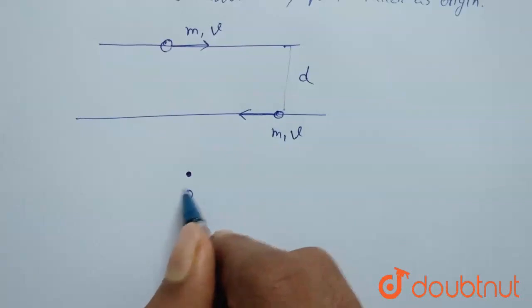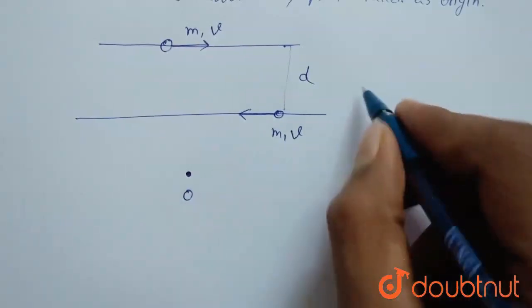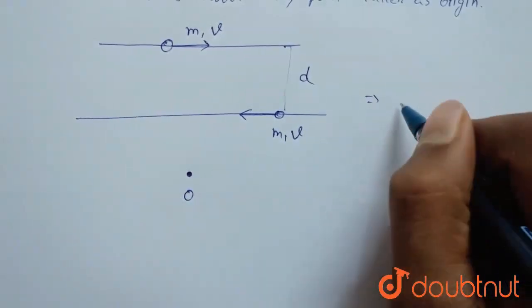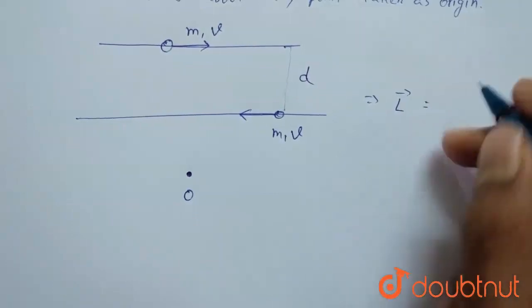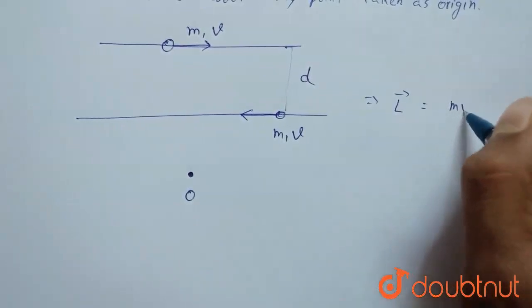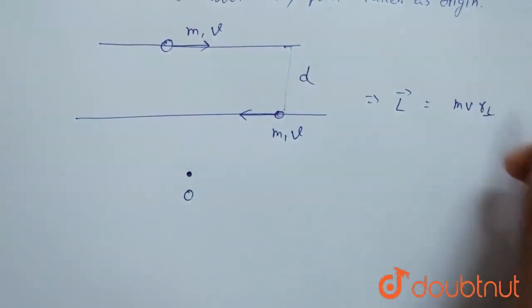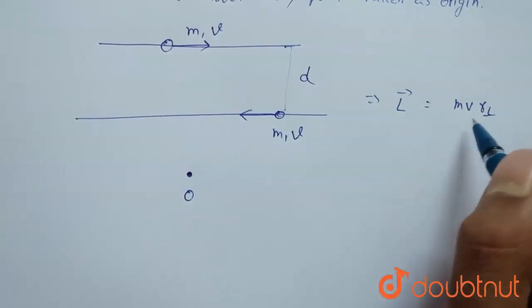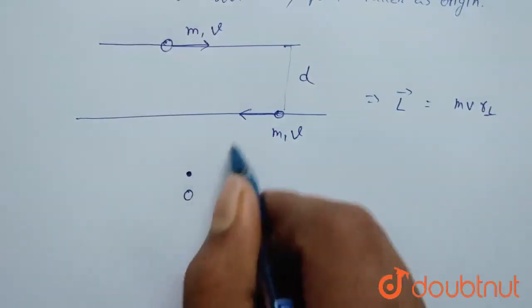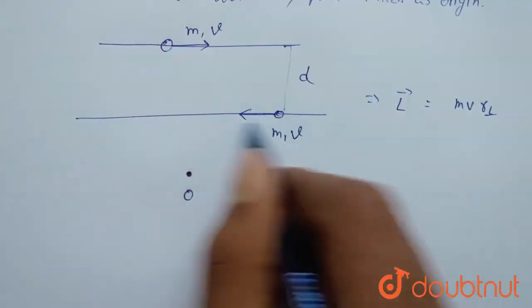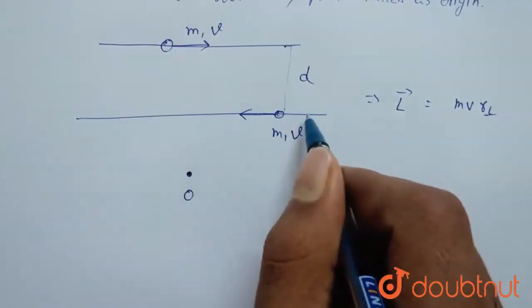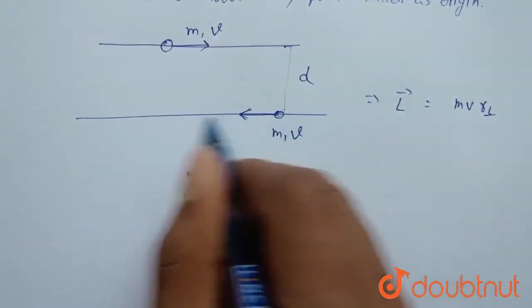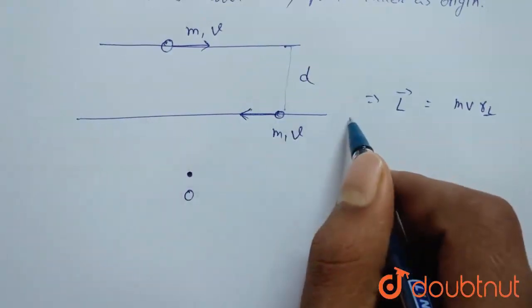I am assuming this O as any fixed point. What is angular momentum? Angular momentum is basically mv into r perpendicular, that is perpendicular distance of that line of movement. If we draw a line on which this particle will go.